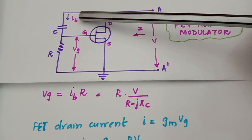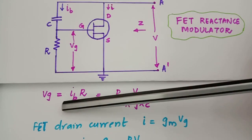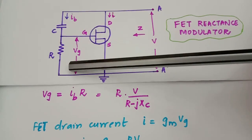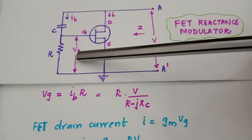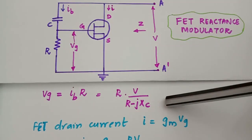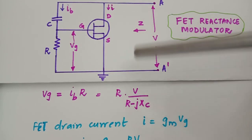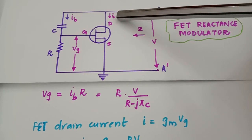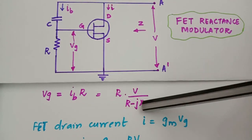Provided that the conditions for R and C are met, we are going to prove that Z is a pure reactance. The gate voltage VG is obtained as IB × R, because gate voltage is the voltage across this resistor and IB is the current flowing through the circuit. This equals R × V divided by the impedance of the network R − jXC. So VGS = R × V / (R − jXC). The drain source current for a FET is given by GM × VG, where GM is transconductance and VG is the gate-source voltage. So I = GM × VG.